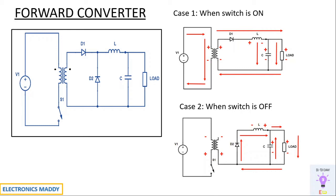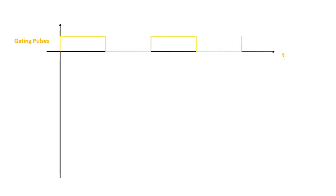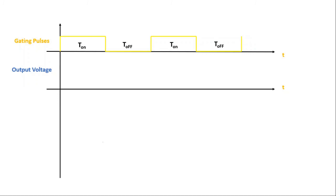Based on the turns ratio of the transformer, we can achieve buck operation, which decreases the voltage, or boost operation, which increases the voltage. Now, regarding the waveforms: we assume T-on equals T-off, which is why the pulse width is shown with equal distances. The desired output voltage should ideally be constant, but practically we get some ripple — it starts increasing and decreasing due to the charging and discharging of the capacitor. By choosing the capacitor value suitably, you can further reduce the ripple.